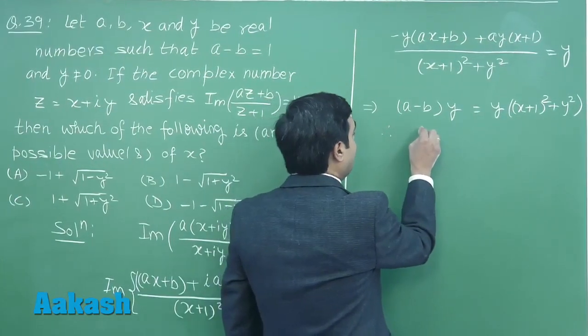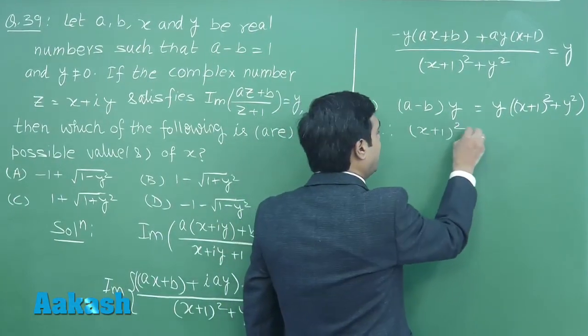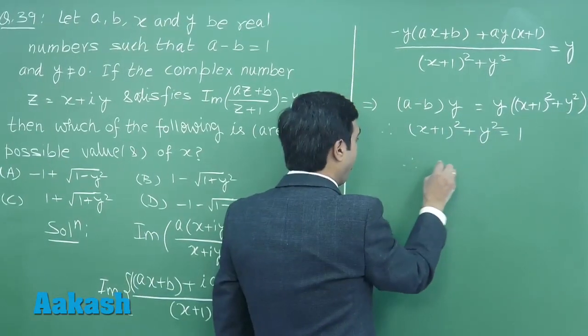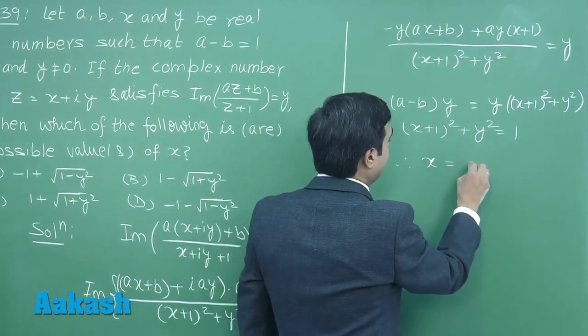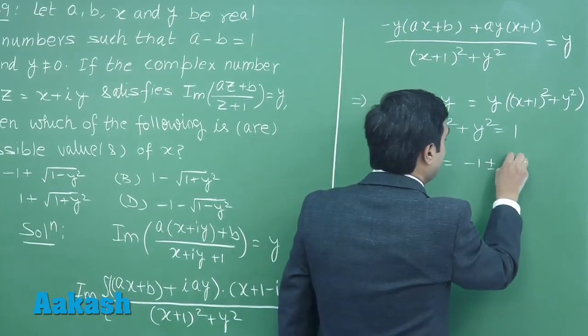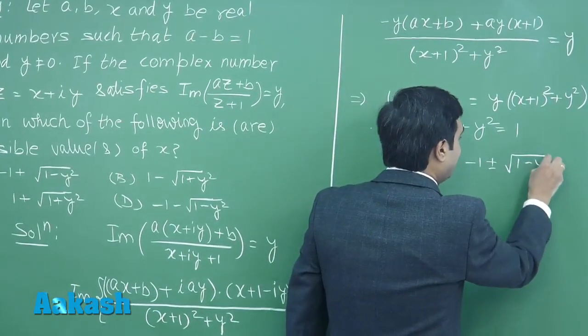We get here (x plus 1) whole square plus y square equals 1, or x equals minus 1 plus minus root (1 minus y square).